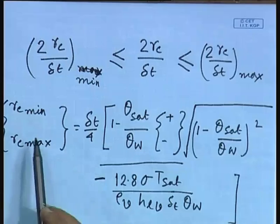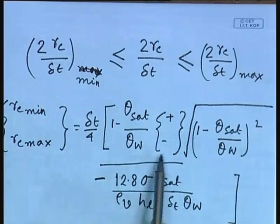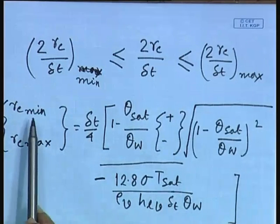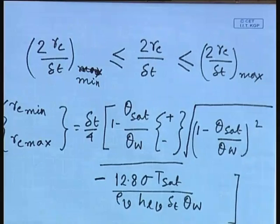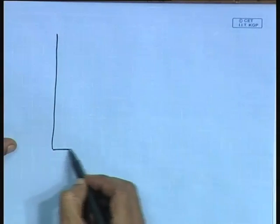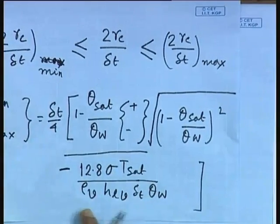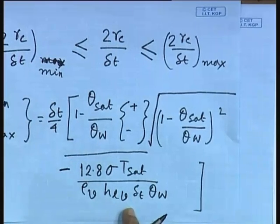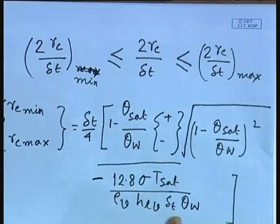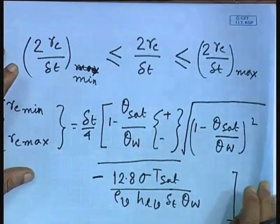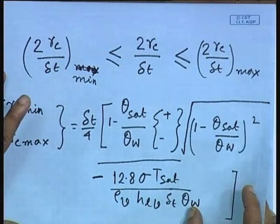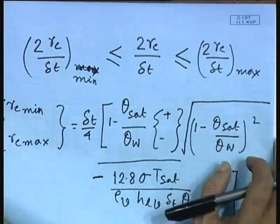R_C max corresponds to the minus value, so within the computed range we get R_C minimum and R_C maximum. Both R_C minimum and R_C maximum depend on a number of fluid properties — sigma, rho_V, h_LV, etc. — and also on delta_T (the thickness of the thermal boundary layer), the wall temperature, and the saturation temperature.